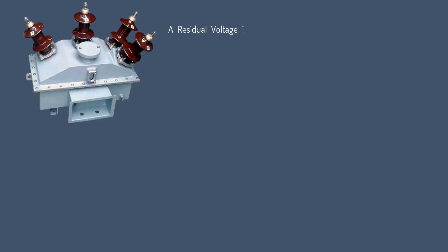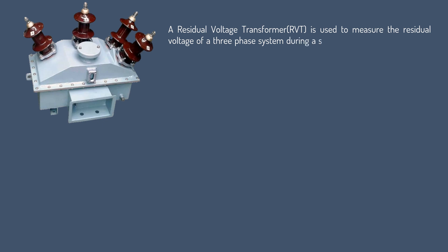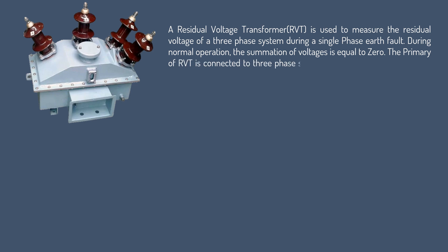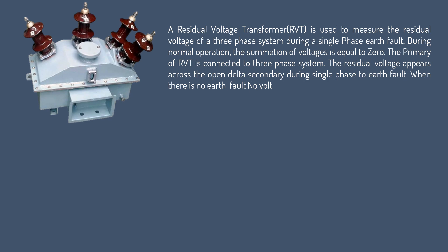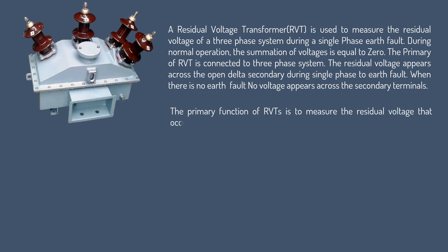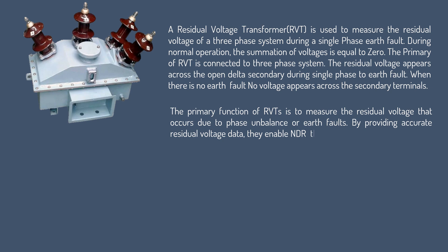A Residual Voltage Transformer (RVT) is used to measure the residual voltage of a three-phase system during a single-phase earth fault. During normal operation, the summation of voltages is equal to zero. The primary of RVT is connected to the three-phase system, and the residual voltage appears across the open delta secondary during a single-phase to earth fault. When there is no earth fault, no voltage appears across the secondary terminal. The primary function of RVT is to measure the residual voltage due to phase unbalance or earth fault, enabling NDR to identify and isolate the faulty part of the system promptly.